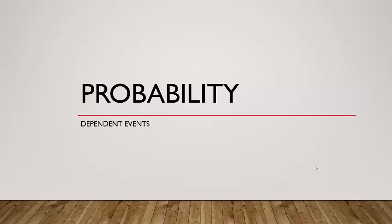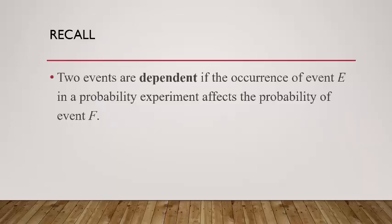In this lecture, we want to talk about dependent events, and ultimately the general multiplication rule for dependent events. In a previous lecture, we talked about independent events, so let's start with a refresher. Two events are dependent — we'll call them E and F, where E comes first — if the occurrence of event E affects the probability of event F. With independent events, the occurrence of E did not affect F. Here, it's just different.